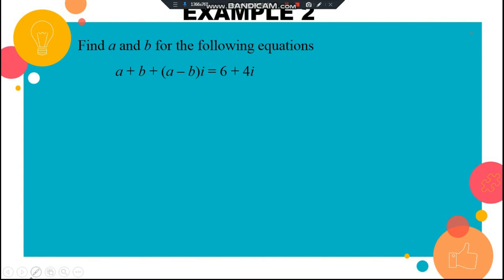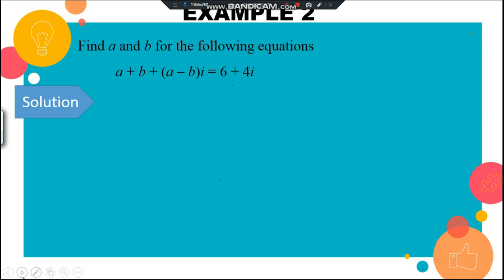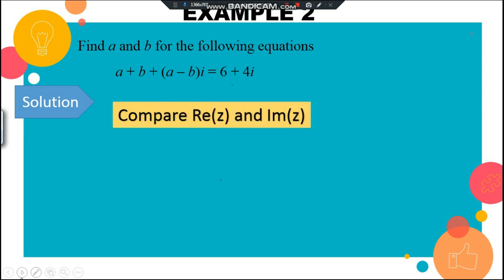This next one is a bit more challenging. We have (a + b) plus (a minus b)i, and we need to find a and b. The key word is always: compare. Compare the real part and the imaginary part of the complex number.